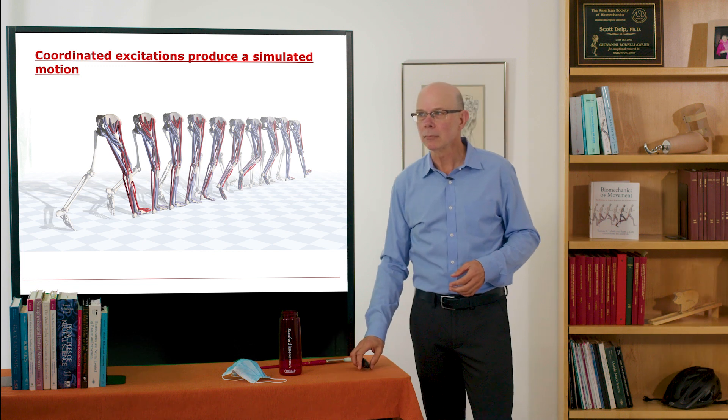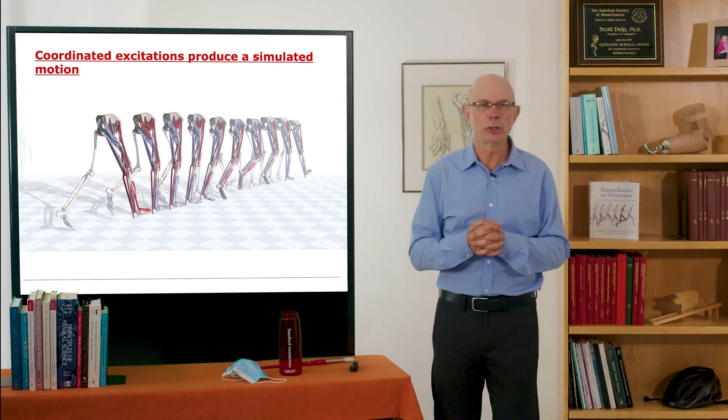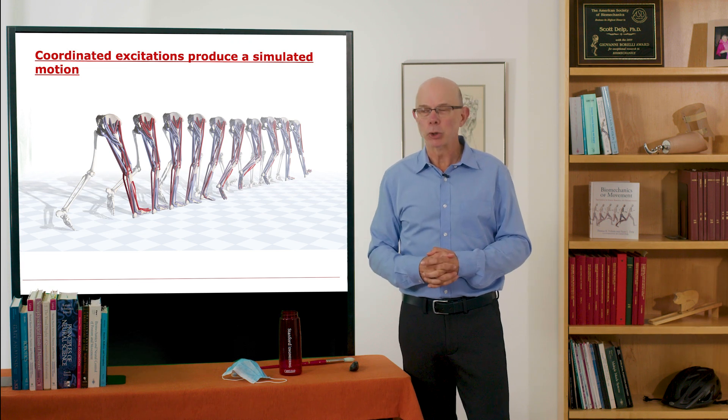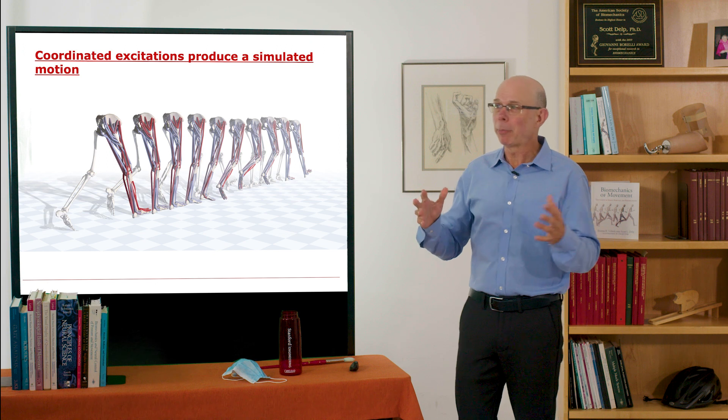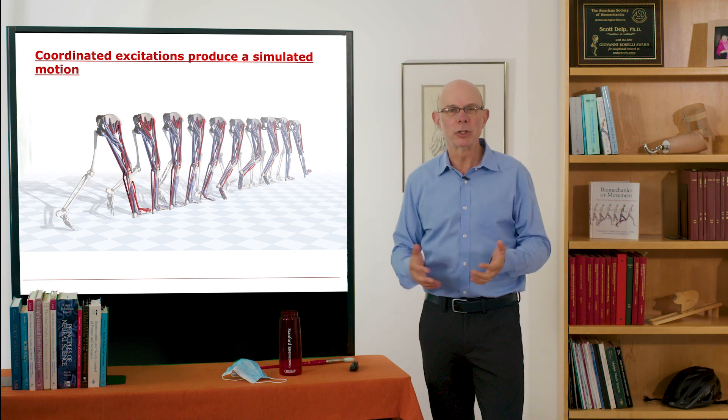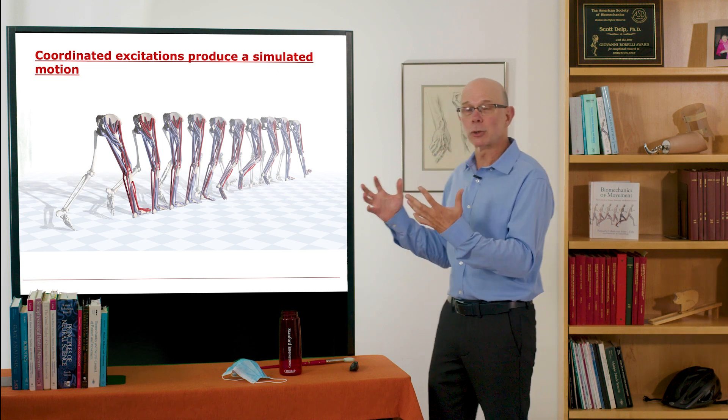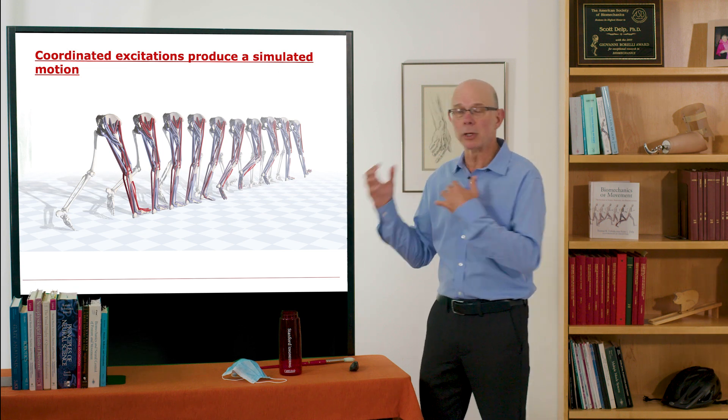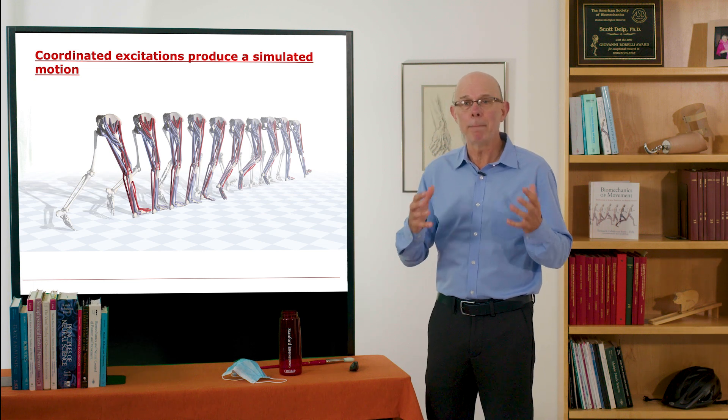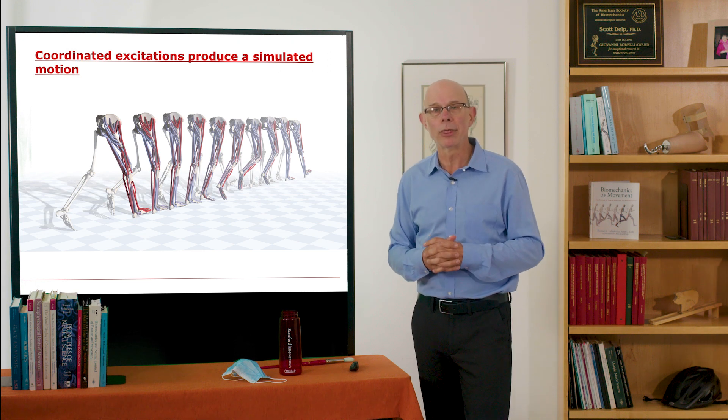Once we have that coordinated pattern of excitations, we can produce a well-orchestrated motion. Here's just a set of frames from a muscle driven simulation of walking. What you can see from that is the red muscles are ones that are excited, the blue muscles are relaxed. We can see the timing and pattern of excitation. You can see that in your textbook, and I provide plots along with that.